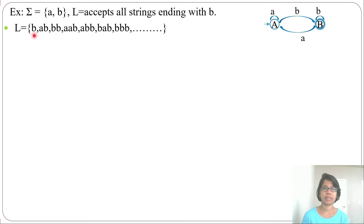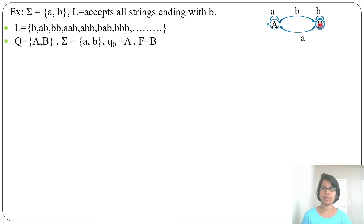What does this machine accept? It accepts single b (from start state A, by b, it reaches final state B). It also accepts ab, bb, aab, bab — any string ending with b. Here, Q is {A, B}, the alphabet sigma is {a, b}, Q0 is A (the starting state), and F is {B} (the final state). The final state is always marked with a double circle and the starting state with an arrow mark.